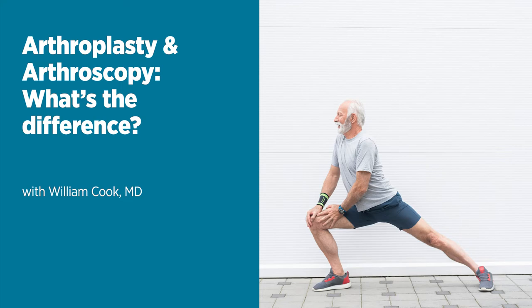Now, with arthroscopy, those of us who follow sports know that often we'll hear that an athlete was subject to one so that doctors could, quote-unquote, take a look to see what's going on. We can get a good first estimate with physical exam and imaging studies, but sometimes we just have to look in the joint and assess different structures to see if something's torn or out of place, or if there was something that wasn't recognized on an imaging study, such as an x-ray or an MRI.